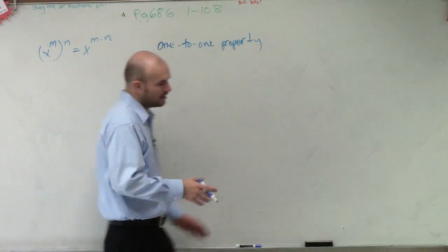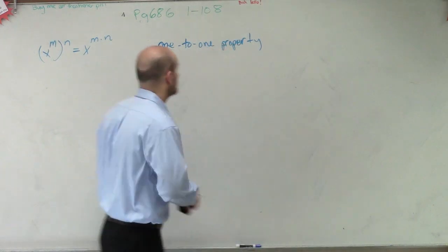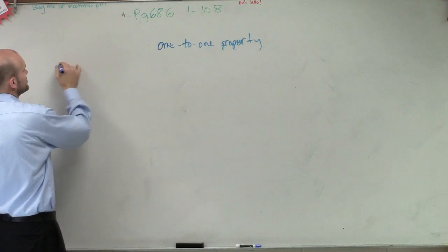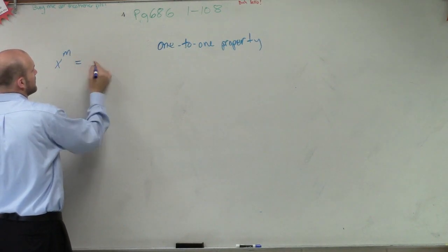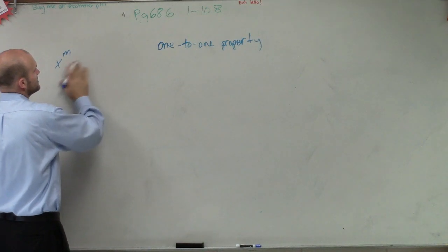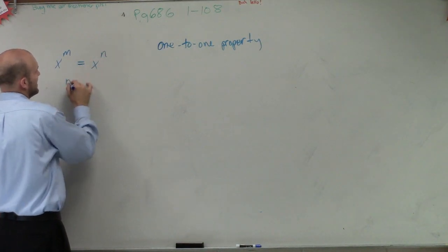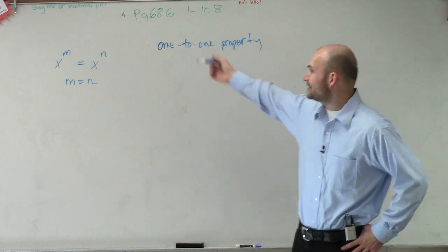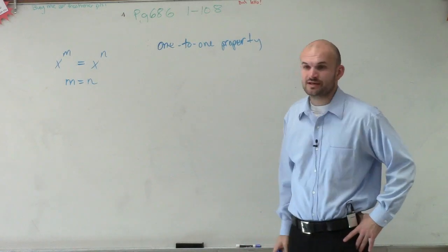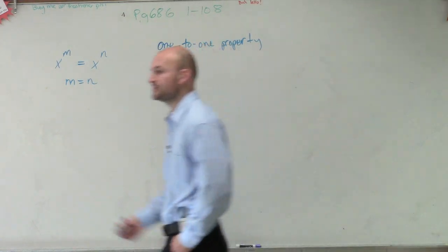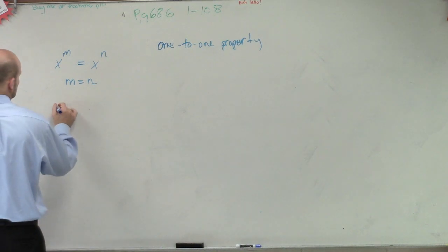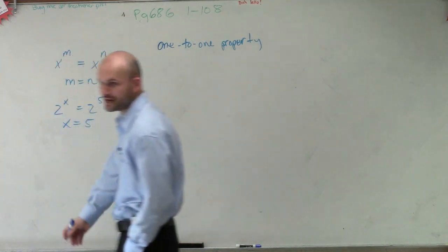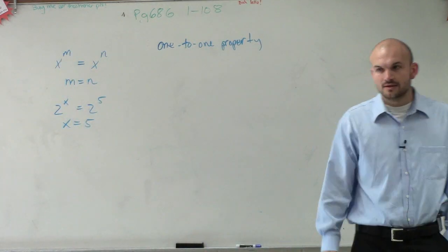So far we talked about our one-to-one property for exponential form is x to the m equals x to the n, then m equals n, right? You could use whatever variable. You could use a and b like I did before. But you guys need to understand that if you have the same basis, then the exponents can equal each other. And I proved this by doing this logarithm. 2 to the x equals 2 to the fifth, x has to equal 5, right? And that makes sense when you kind of use some numbers with that, correct?